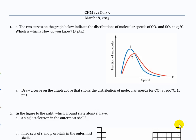One is SO₂. Looking at what the graph is showing: curve number one has the distribution of speeds in the slower range, so more molecules are moving more slowly. Number two has more molecules moving more quickly. So the larger, heavier one is going to be moving more slowly, and the lighter one more quickly. So one is SO₂ and two is CO₂ because of that.